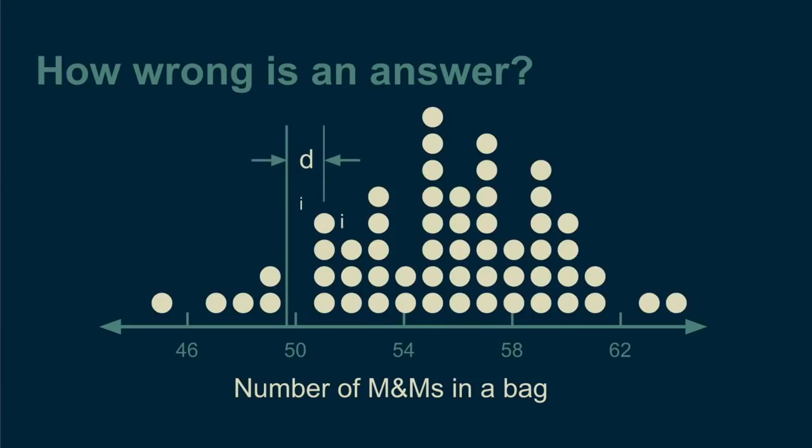If I number each bag of M&Ms, then the difference between my guess and the count of bag number one is d1. The difference between my guess and the count of bag number two is d2. The difference between my guess and the count of bag i is di. d is often called the deviation. The next thing I need to decide is if I'm off by a certain deviation, how much do I care? What's the cost to me?